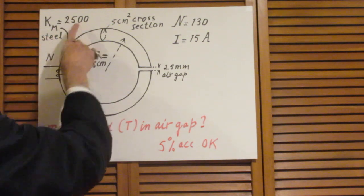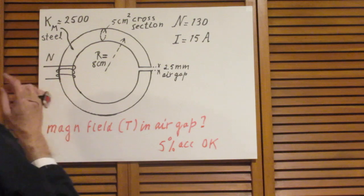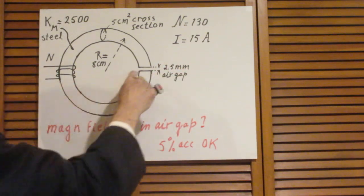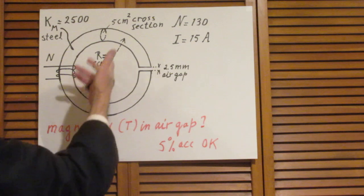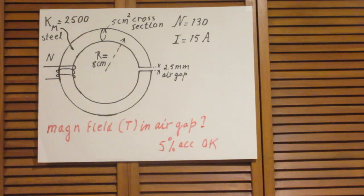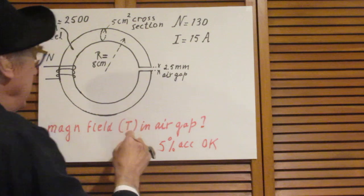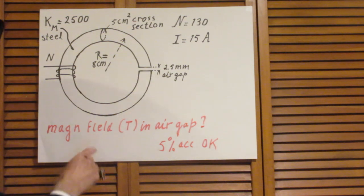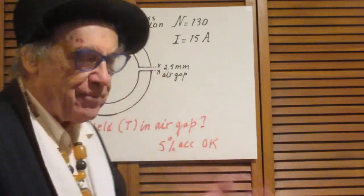Here is the circular steel core of the electromagnet. The steel has a relative permeability of about 2500. The cross-sectional area of this core is about five square centimeters, and the air gap is only about two and a half millimeters. The radius of this core is about eight centimeters. There are 130 windings, and the current through this wire is 15 amperes. The question is: what is the magnetic field in Tesla inside the air gap?